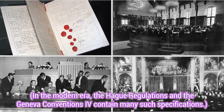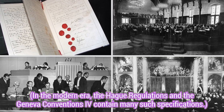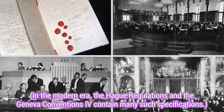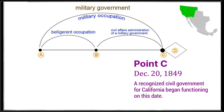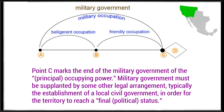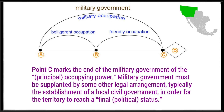In the modern era, the Hague Regulations and Geneva Convention 4 contain many such specifications. Point C: December 20, 1849. A recognized civil government for California began functioning on this date. Point C marks the end of the military government of the principal occupying power. Military government must be supplanted by some other legal arrangement, typically the establishment of a local civil government, in order for the territory to reach a final political status.